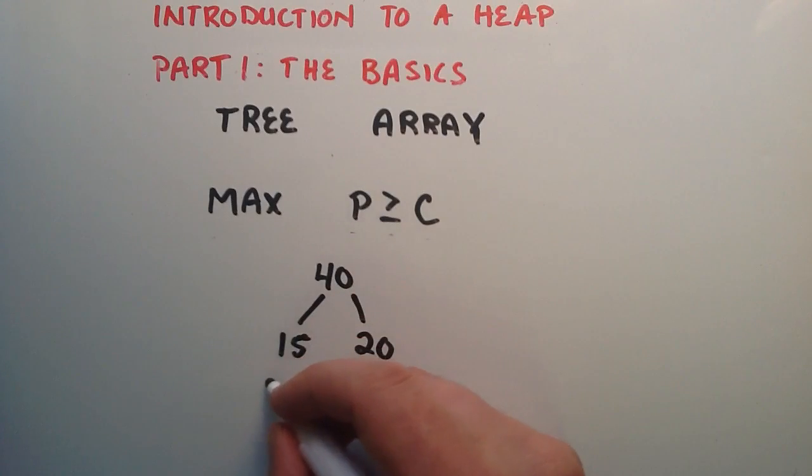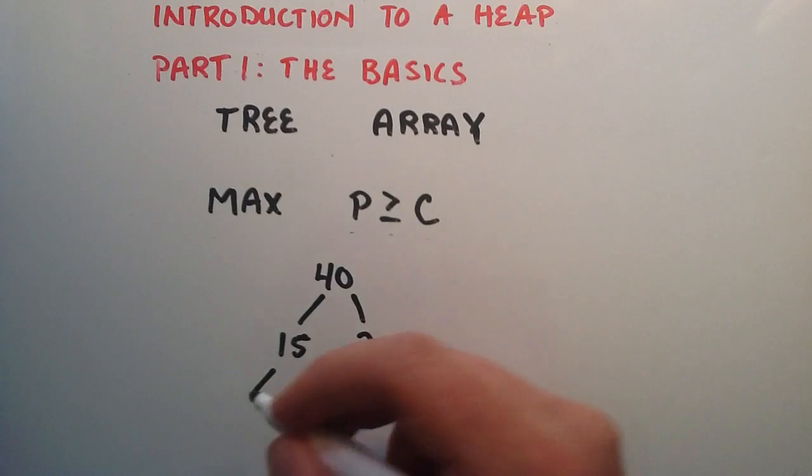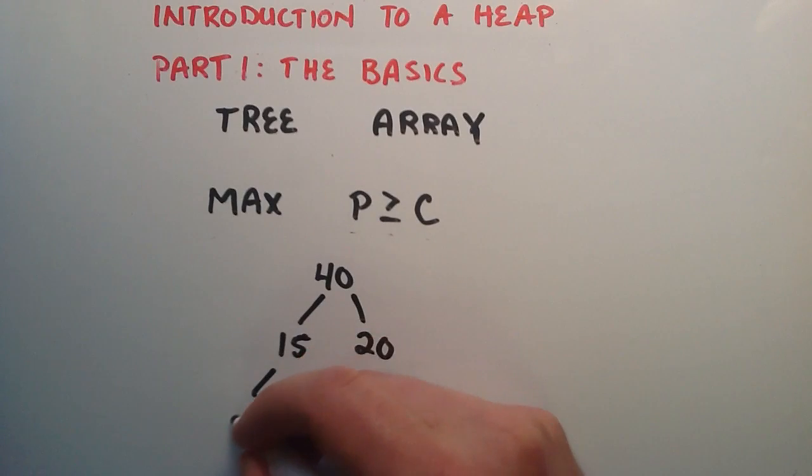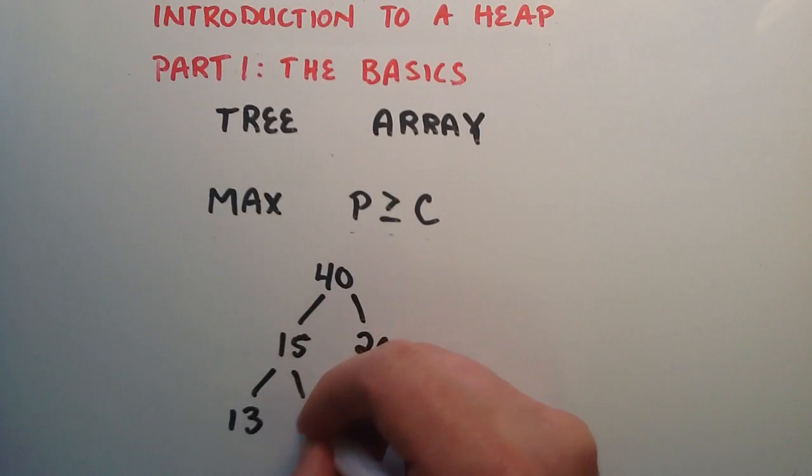And I'm building this from top to bottom, left to right, so that we keep the right structure. And for 15 you can have a child of 13 and 8. And so I just built a max heap here. I built the right structure, top to bottom, left to right, and the parent's values are greater than their children.